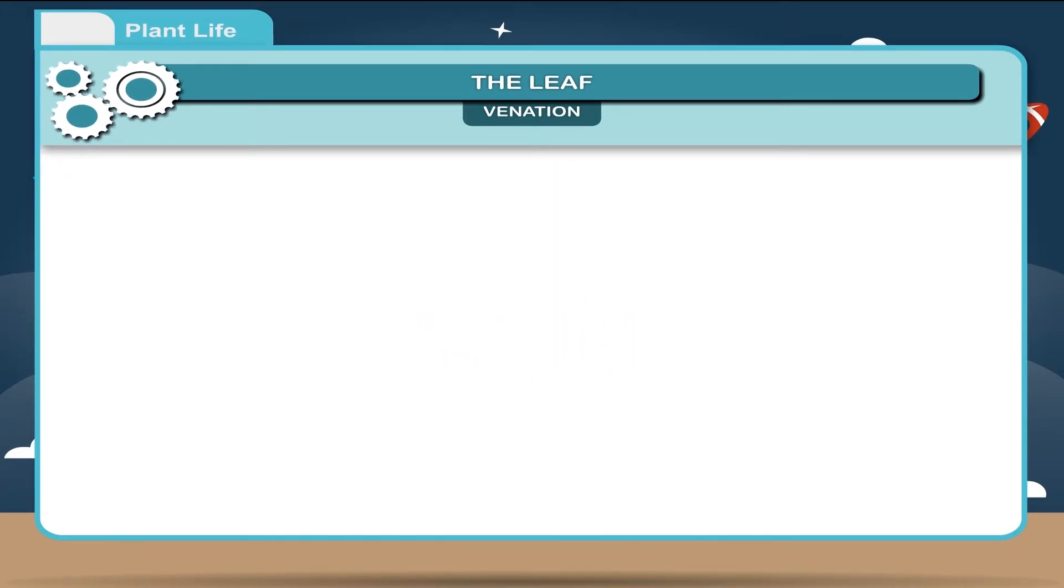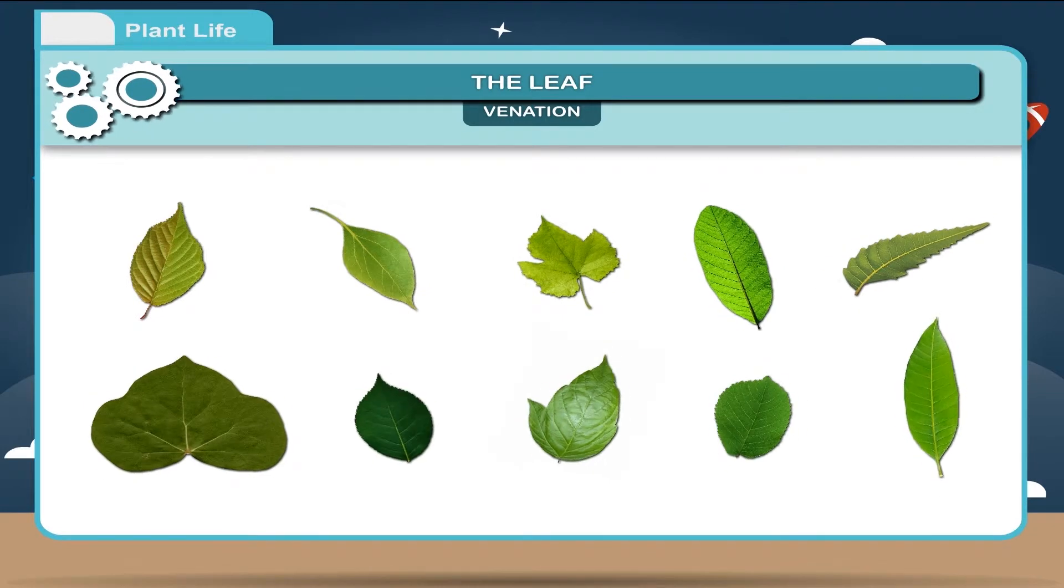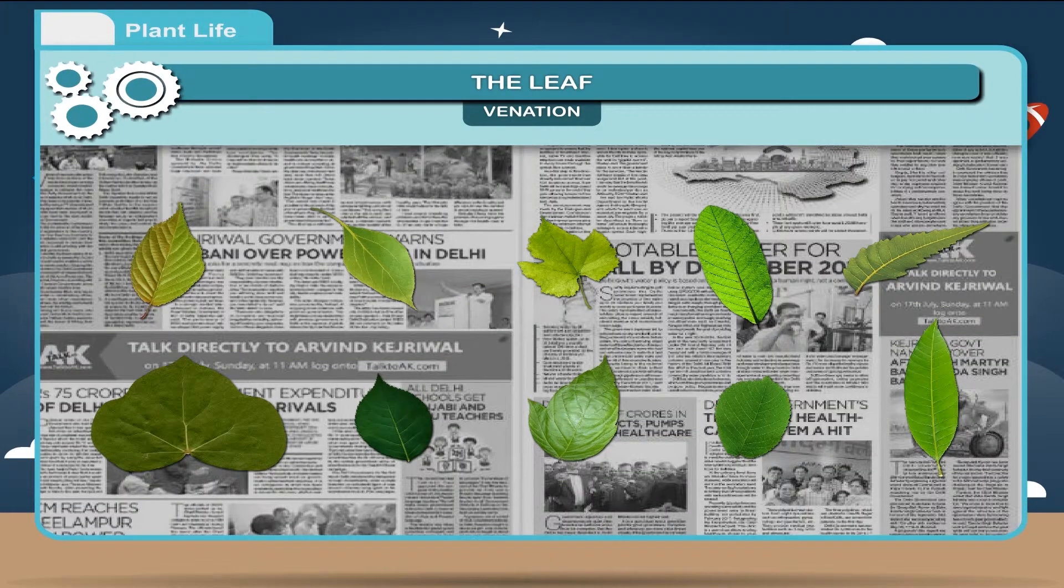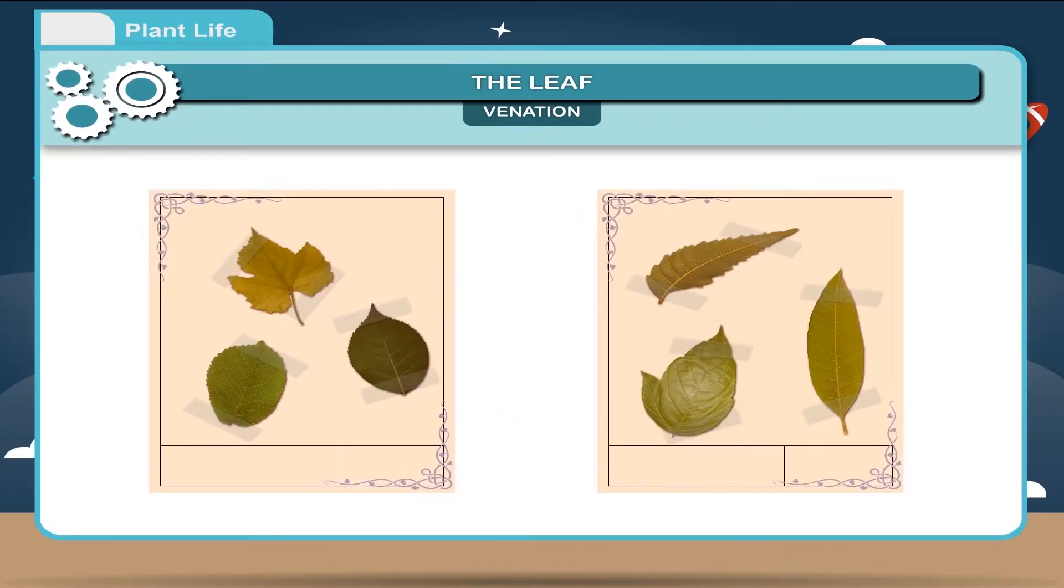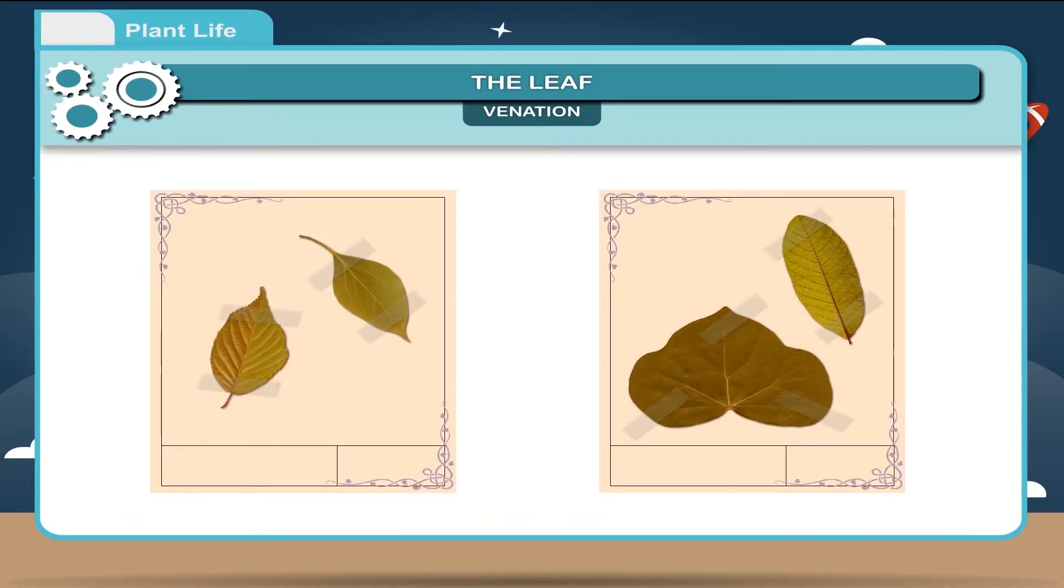Activity. Collect 10 different types of leaves. Dry them by pressing between newspapers. Paste them on herbarium sheet. Observe their venation, shape and margin of the leaf.